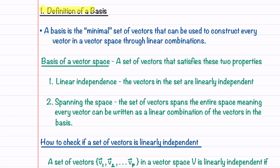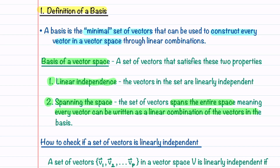Let's start by learning what a basis is. A basis is the minimal set of vectors that can be used to construct every vector in a vector space through linear combinations. The basis of a vector space satisfies two properties. The first property is linear independence, meaning that the vectors in the set are linearly independent. The second property is spanning the space — the set of vectors spans the entire space, which means that every vector can be written as a linear combination of the vectors in the basis.